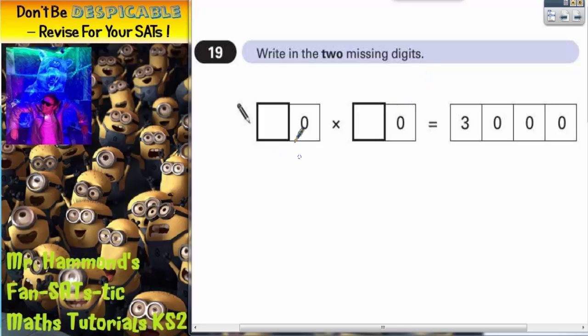We've got a two digit number ending in zero multiplied by another two digit number ending in zero, giving an answer of 3,000 which is a 3 ending in three zeros.